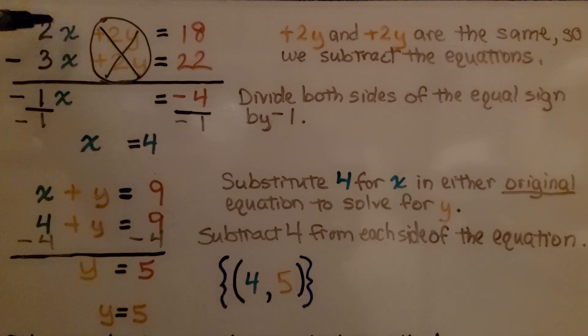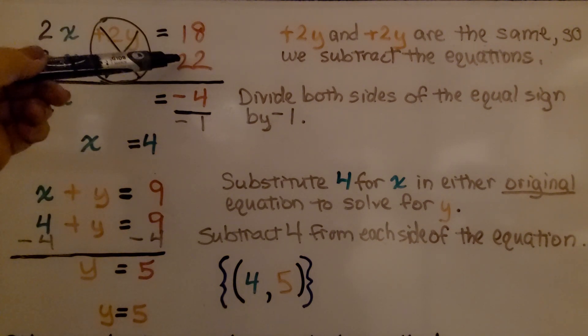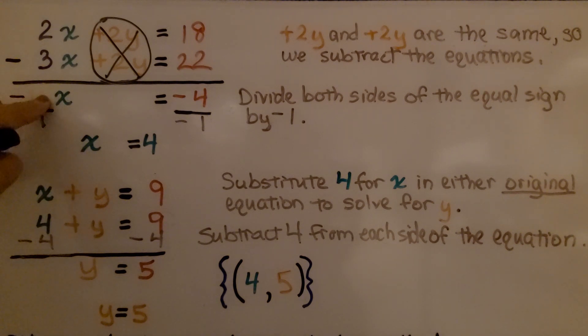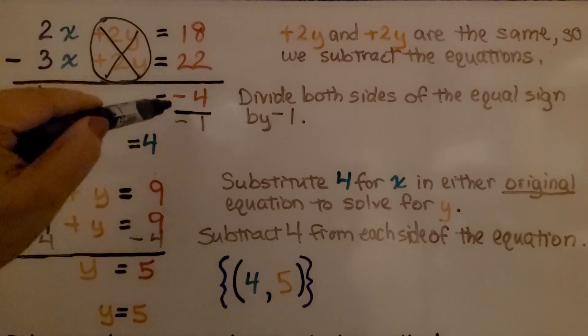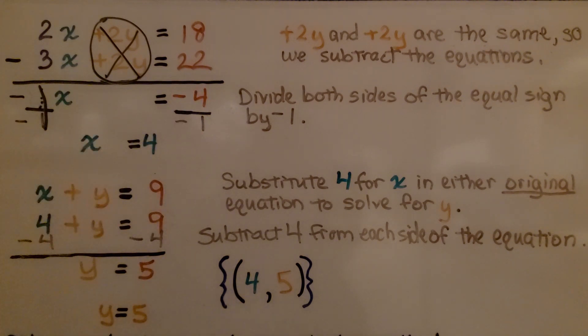Here we have 2x minus 3x. Well, that'll put us into negative 1x. And if we have 18 and take away 22, that'll put us into the negatives for negative 4. Now we divide both sides of the equal sign by this coefficient, negative 1, and you may not see the one written there. If it's like this, we know there's an invisible 1 here. We divide both sides by this negative 1 coefficient, which gives us the same numerator and denominator. So we have 1x, and a negative divided by a negative makes a positive. So negative 4 divided by negative 1, we have positive 4.